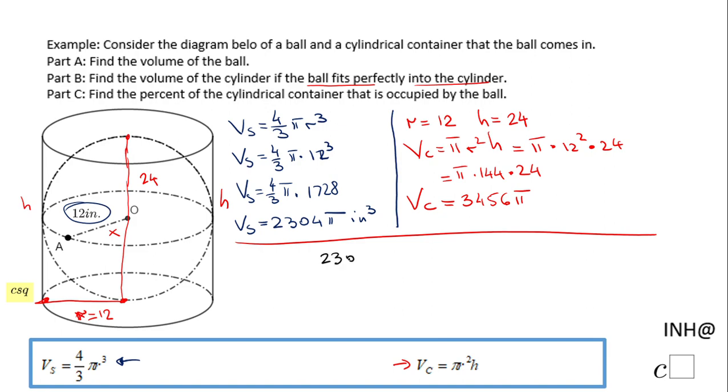This will be the percent. In fact it's going to be a decimal, so let me rewrite this and I will say this one is the occupied space. If we simplify here, the π cancels, we have only 2304 over 3456.